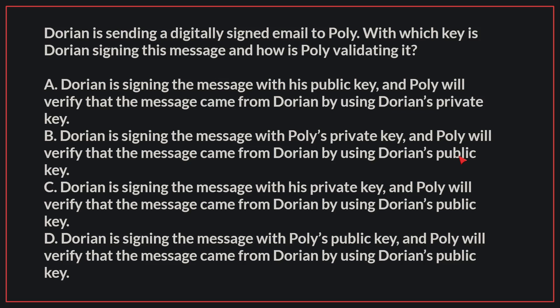Dorian is sending a digitally signed email to Polly. With which key is Dorian signing this message and how is Polly validating it? The correct answer is C: Dorian is signing the message with his private key, and Polly will verify that the message came from Dorian by using Dorian's public key.